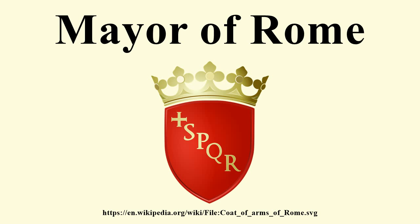Kingdom of Italy — from 1870. When Rome was annexed, the Kingdom of Italy created the office of the Mayor of Rome, chosen by the City Council.